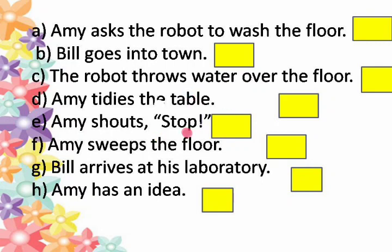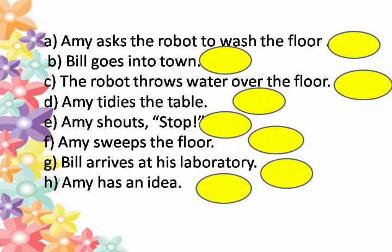Students, first let's read together. Amy asked the robot to wash the floor. Bill goes into town. The robot throws water over the floor. Amy tidies the table. Amy shouts, stop. Amy sweeps the floor. Bill arrives at his laboratory. Amy has an idea. Let's number them.